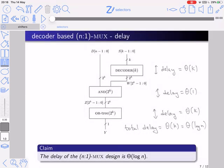What about delay? Let's analyze the delay of each component separately. The delay of the OR tree is K. The delay of the row of ANDs is 1. And the delay of the decoder is K. We sum these up, we get that the total delay is K. K is log N, and therefore the delay of the N to 1 MUX is big Theta of log N.